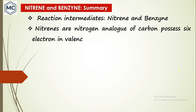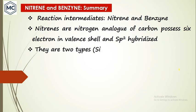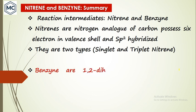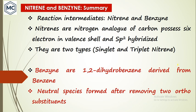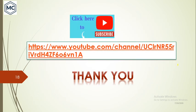In summary, we have learned two reaction intermediates: nitrene and benzyne. Nitrenes are nitrogen analogs of carbene, possessing six electrons in the valence shell, and are sp or sp2 hybridized depending on whether they are triplet or singlet. Benzynes are 1,2-didehydrobenzene derived from benzene, neutral species formed after removing two ortho substituents. Thank you for watching, see you next week.